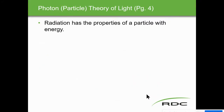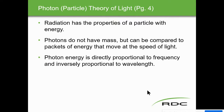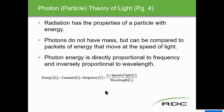In photon particle theory of light, radiation has properties of particles with energy. Photons have no mass but can be compared to packets of energy moving at the speed of light. Photon energy is directly proportional to frequency and inversely proportional to wavelength — so UV energy has far more energy than infrared energy. The shorter the wavelength, the more energy; the longer the wavelength, the less energy.